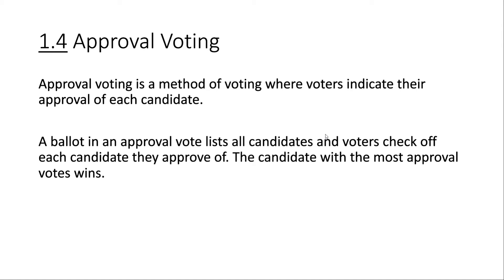In this video we're going to be talking about the approval method of voting. Approval voting is a method where voters indicate their approval of each candidate. A ballot lists all the candidates and voters check off each candidate they approve of. The candidate with the most approval votes wins. Basically, this is a method where you can vote for as many candidates as you want.